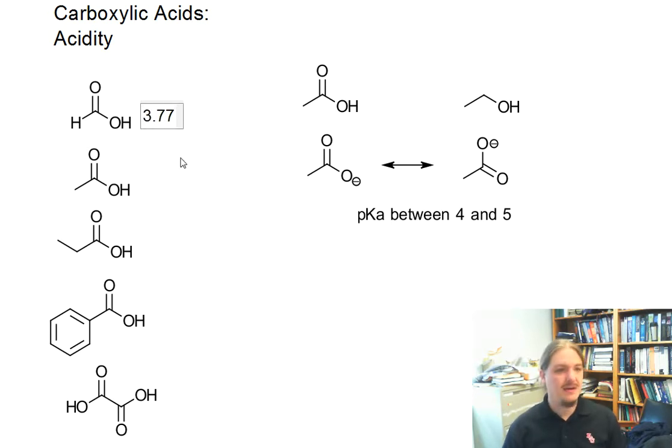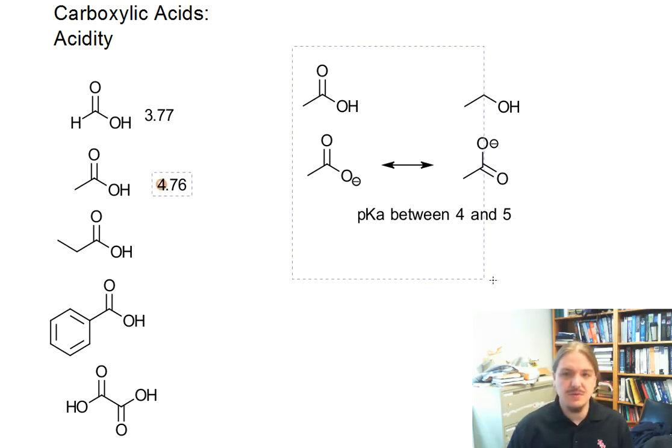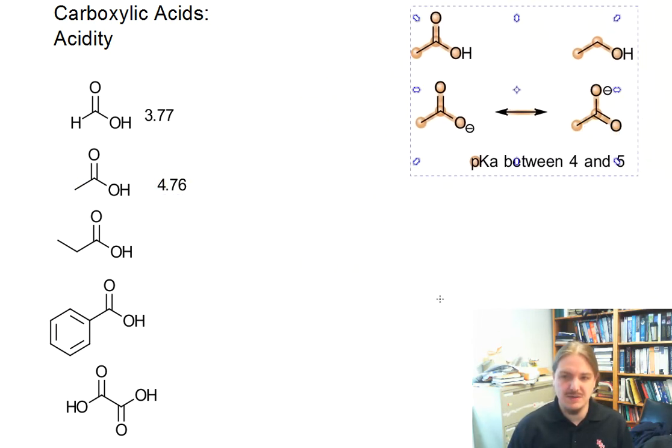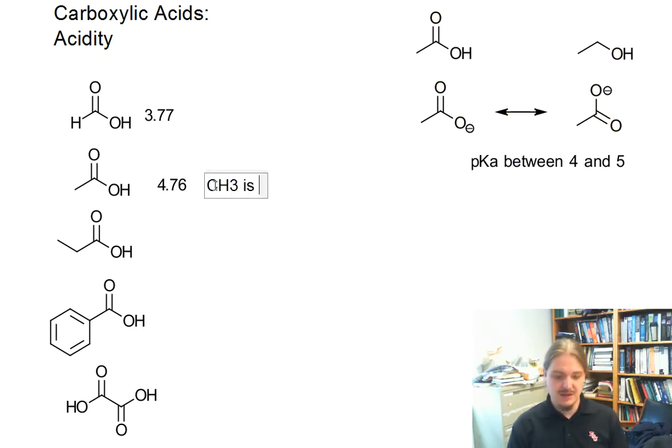The pKa of formic acid is 3.77. pKa of acetic acid is 4.76. And so the increase in pKa means that acetic acid is a weaker acid than formic acid. And you can attribute that to CH3 being electron donating.